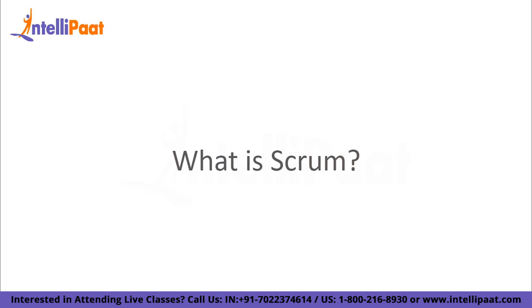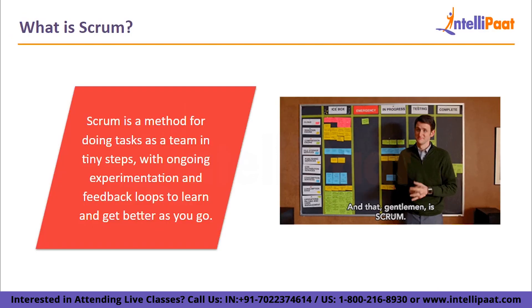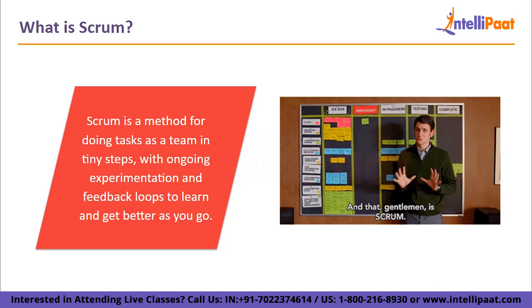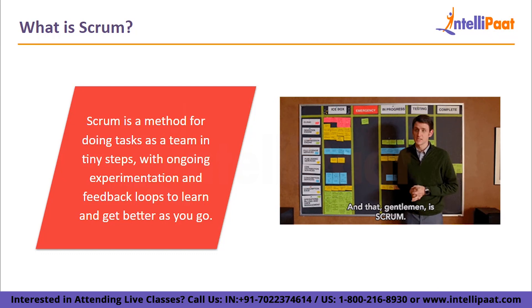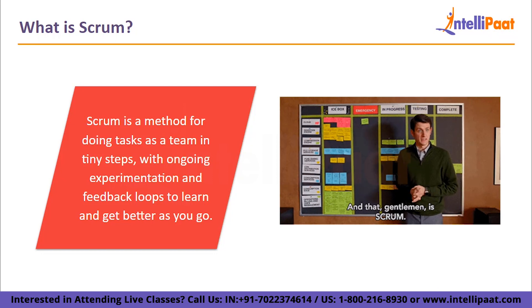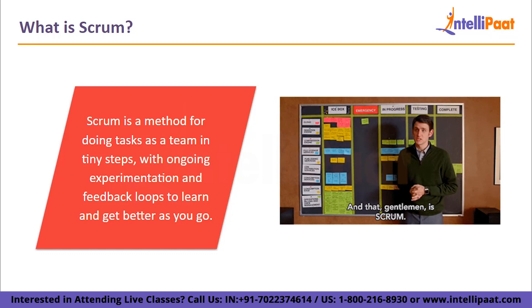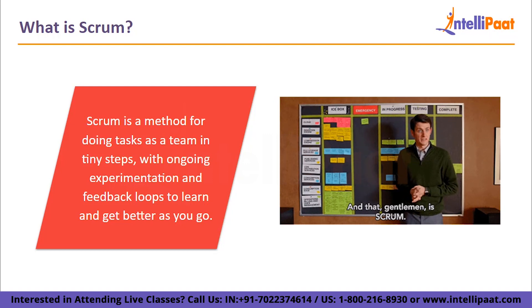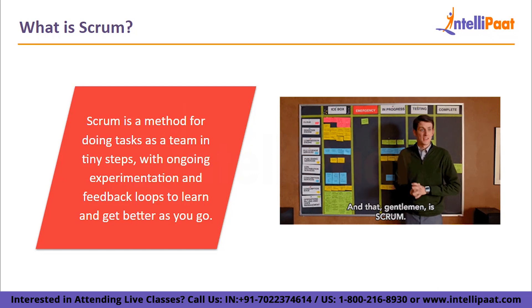Let us talk about Scrum. Scrum is a method for doing tasks as a team in tiny steps with ongoing experimentation and feedback loops to learn and get better as you go. Scrum enables individuals and teams to collaboratively and gradually generate value. As an Agile framework, Scrum gives people and teams the right amount of structure to fit into their workflows while including the necessary best practices to cater to their individual requirements. Scrum is an empirical method where choices are derived through experience, experimentation and observation. Scrum is built on three pillars: transparency, inspection and adaptation, backing up the idea of iterative development.